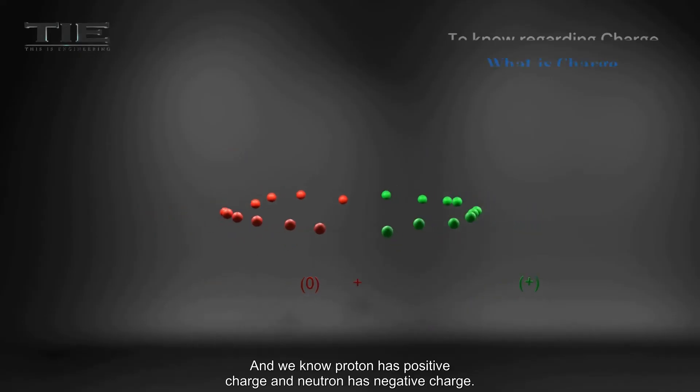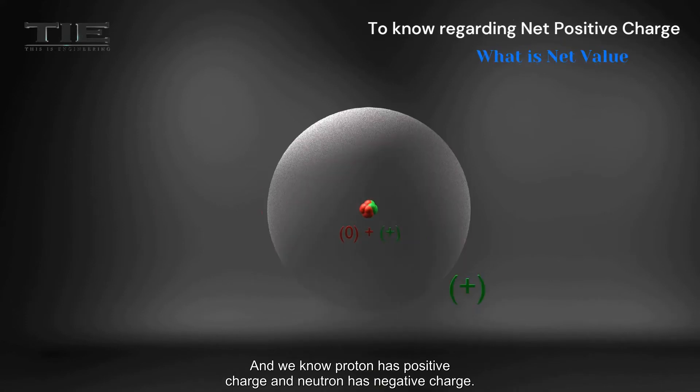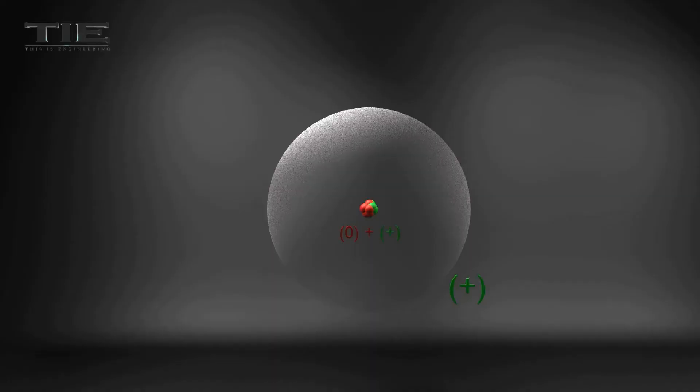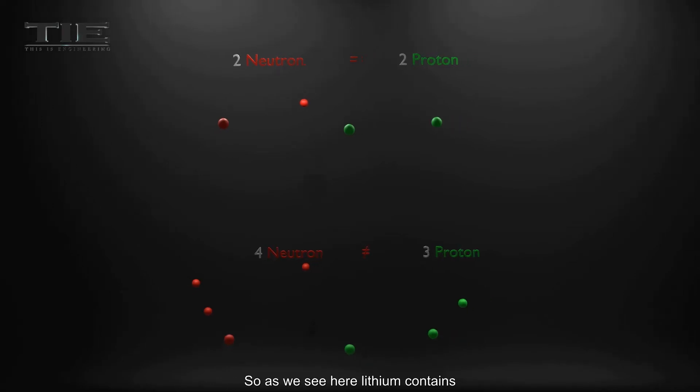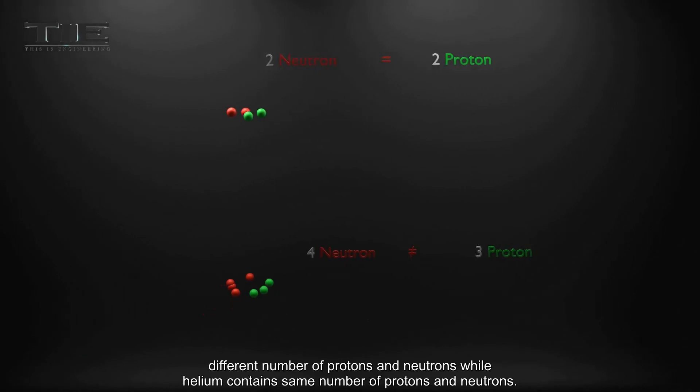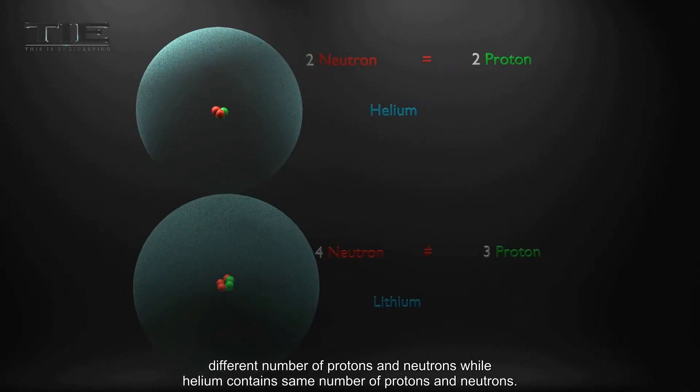We know protons have positive charge, and neutrons have negative charge. Therefore, the nucleus possesses net positive charge. The number of neutrons and the number of protons in a nucleus may be the same or not. As we see here, lithium contains different numbers of protons and neutrons, while helium contains the same number of protons and neutrons.